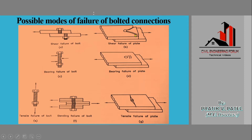Bearing failure of bolt is the type of failure a bolt may undergo. You might have experienced that when you keep on tightening the bolt and it just keeps on rotating but does not get tightened — this is known as bearing failure. It may be of the bolt or of the plate. Most commonly we have bearing failure of the plate, because bolts are generally stronger than the plates.